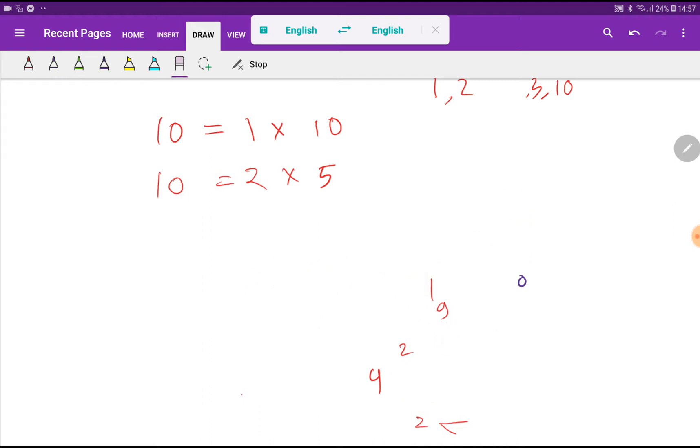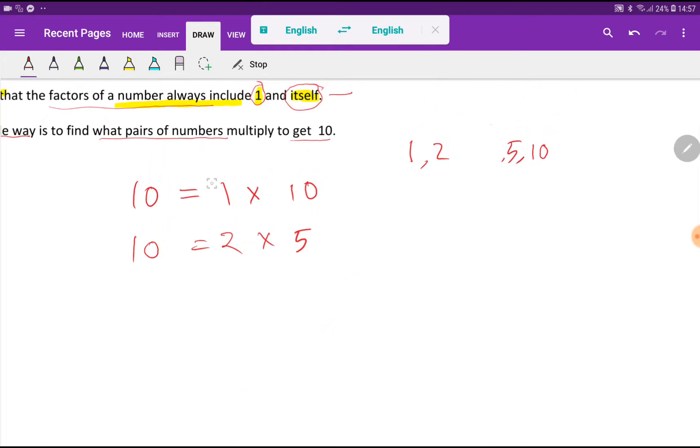Basically, we are getting 4 positive factors for 10. You have to write 1, then 2, then 5, then 10. So these are the 4 factors of 10.